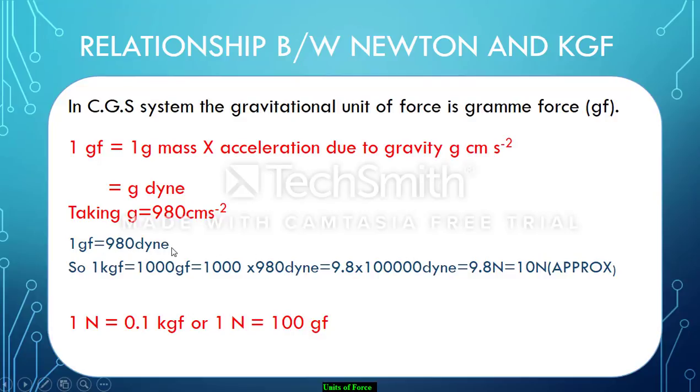What is gf here? 980 dyne. I am putting the value of 980 dyne here directly in the place of g. 980 dyne again, this one comes as 9.8 into 10 to the power 5 dyne. 10 to the power 5 dyne means what? 1 Newton is 10 to the power 5 dyne. We have earlier studied in the slides. So directly writing 9.8 Newton. So 1 kgf is actually 9.8 Newton. We can take it on an approx as 10 Newton. I have written here approx 10 Newton.